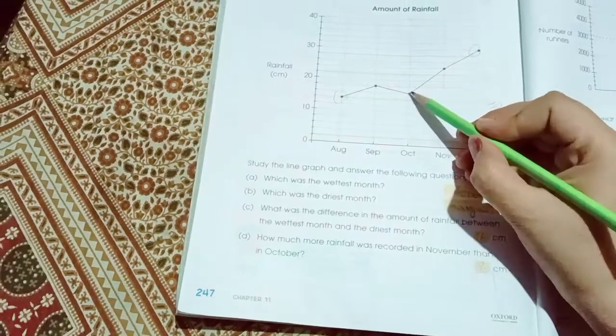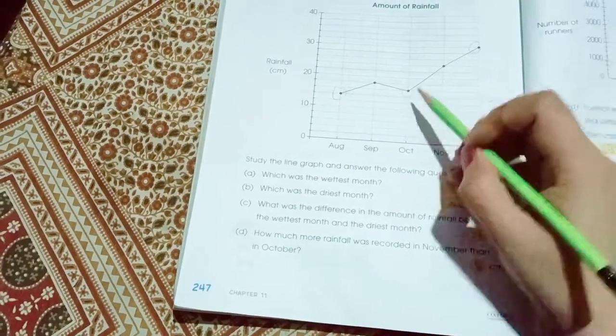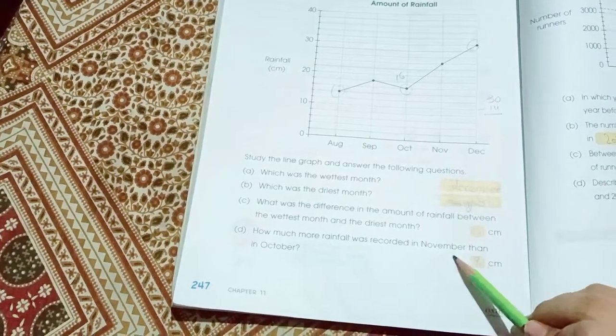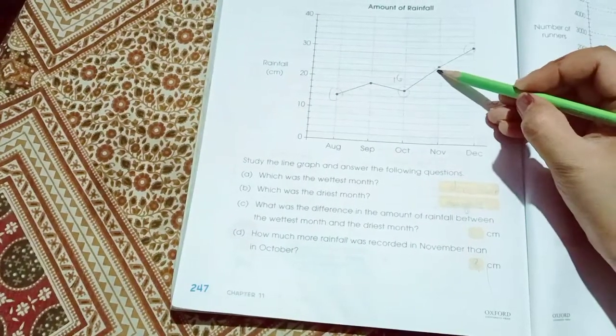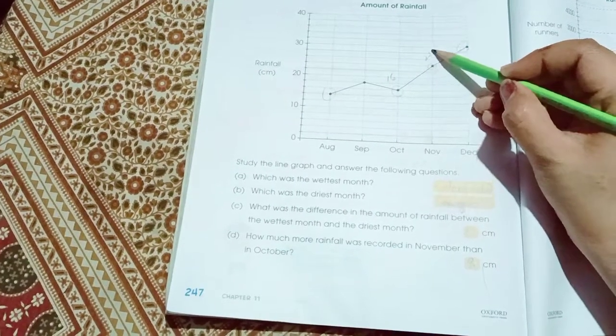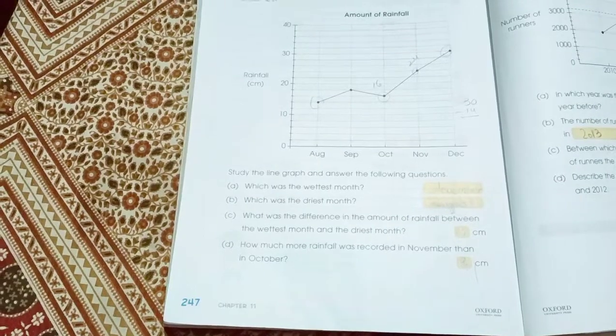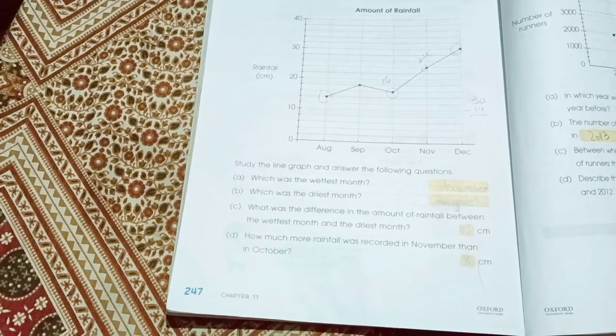How much more rainfall was recorded in November than in October? 8 cm. In October the rainfall is 16 and in November the rainfall is 24. 16 minus 24 is 8.